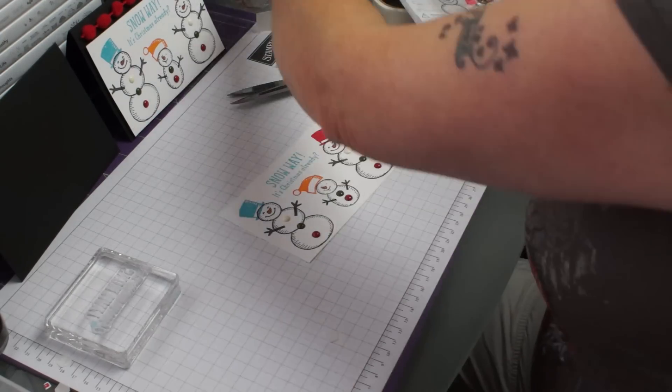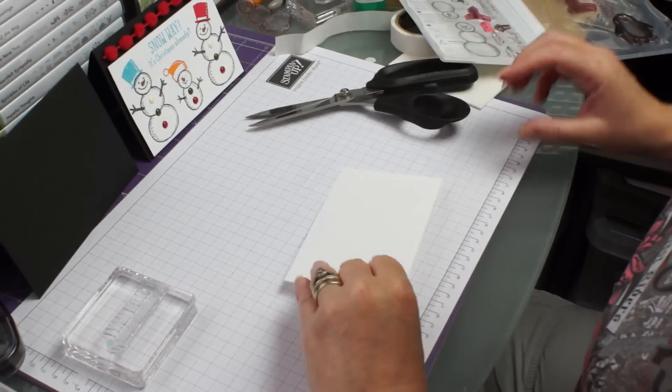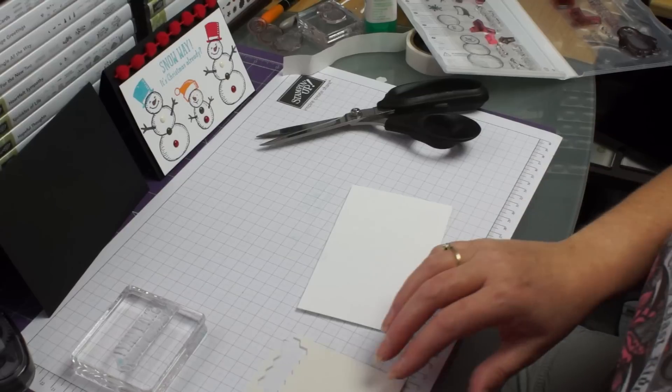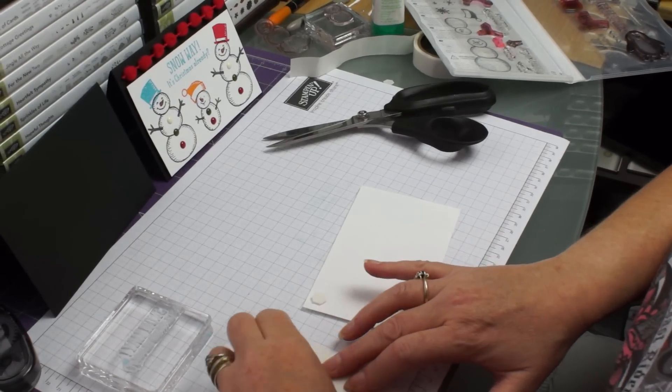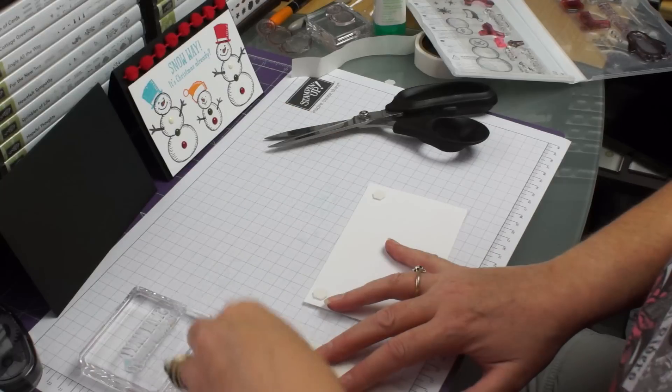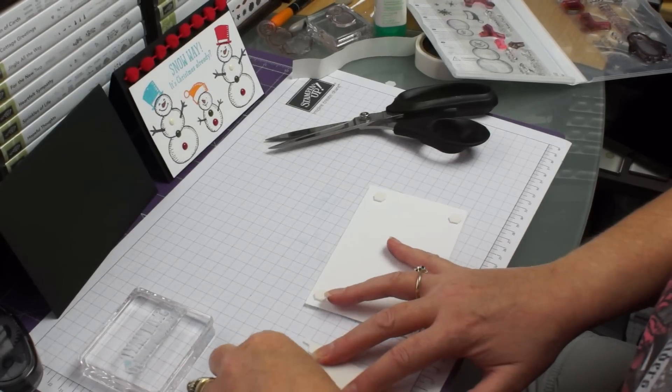Now they've got their nice bodies done and what I did with this is I put some dimensionals on the back so that I could lift it away from the page just to give it a bit of depth.